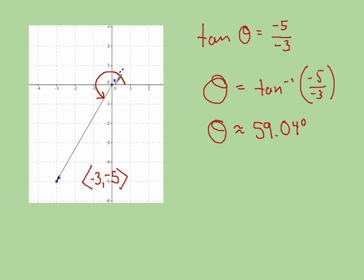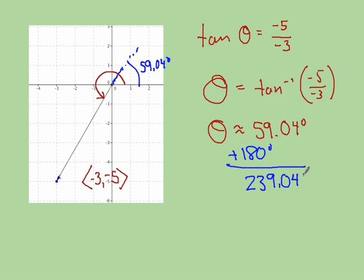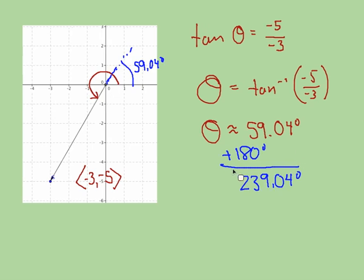which is this piece. And I can see that my angle is going to be bigger than 180. So in this case, I'm going to add 180 to give me 239.04 degrees. So hopefully this helps you when you have the vectors in different quadrants. Thanks for watching.